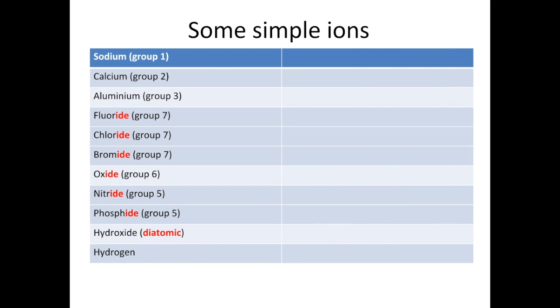Before we start we need to learn some simple ions. So we've got a table here of some of the ions that you need to know by heart. We'll start with sodium, that's a group 1 metal. All group 1 metals form 1 plus ions because they all lose that outermost electron. And so the sodium ion would be Na+.